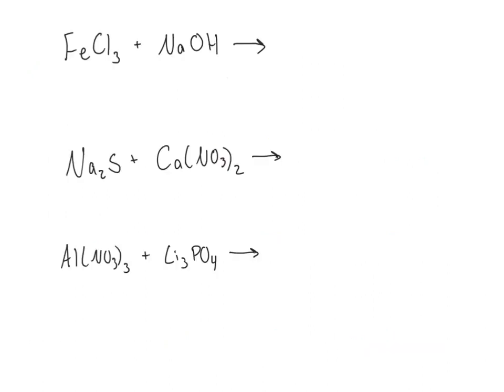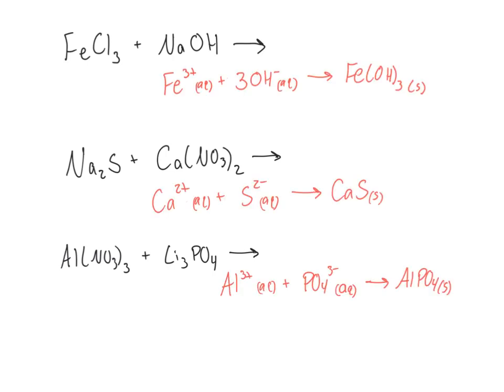Go through the process and practice these on your own. Start by writing out the full balanced molecular formula complete with states of matter. Then write out the ionic equations. And finally, cross out your spectator ions to write the net ionic equations. Pause the video now to work on these and restart the video to check your answers. Answers shown will only be the net ionic equation. Here are all of the final net ionic equations. If this is not what you got, go back through your process, look at the total ionic equations, and see what you might have done wrong. For more practice on net ionic equations, check out the website.